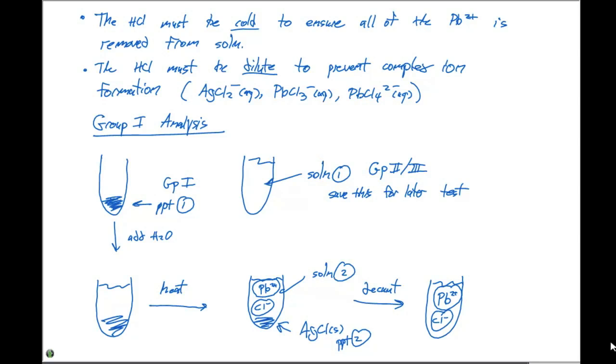This is where we have our confirmation step. And in our confirmation step, we would like the confirmation to be a really bold, vibrant color. So if I have lead two plus in solution and add potassium dichromate, which is K2Cr2O7, what we find is that we get a lead chromate or PbCrO4 solid that is gonna form. This solid is bright yellow.